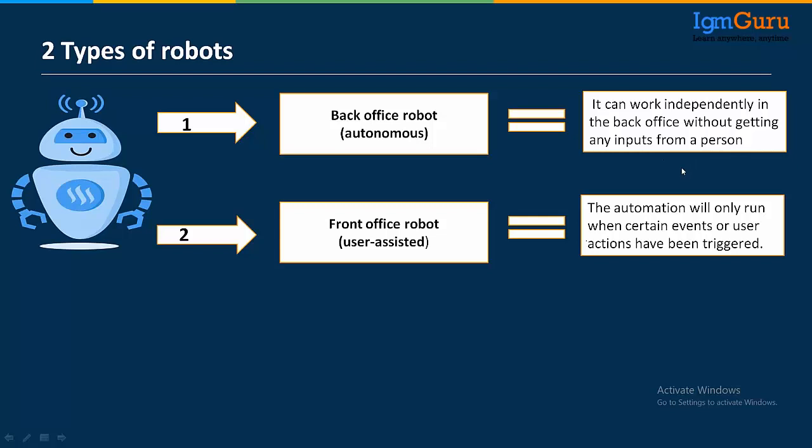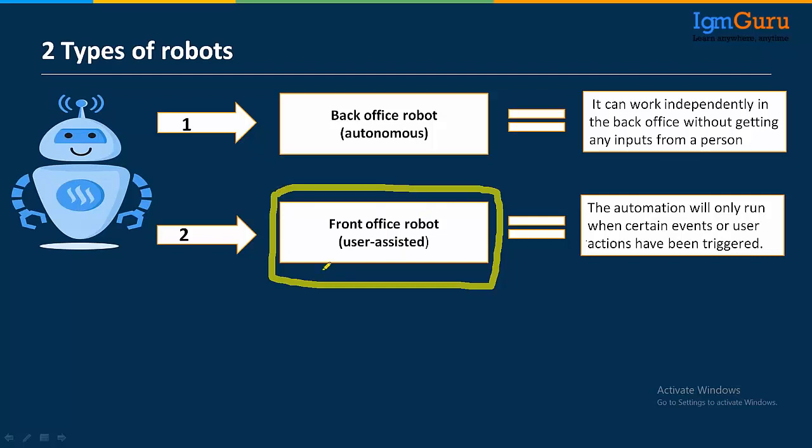A front-office robot example is an IT help desk where users assign tickets, the bot processes them, and if a ticket is resolved it moves forward. If not resolved, it escalates to L2 support. The human working on it needs to provide input at certain points — that is a front-office robot.